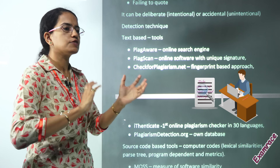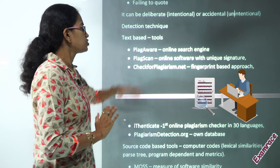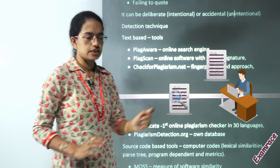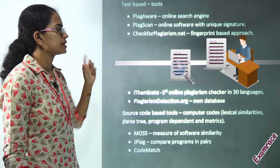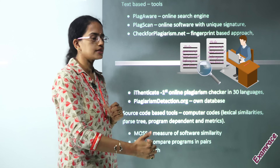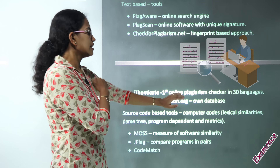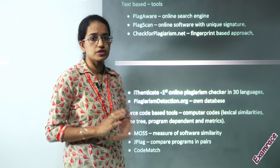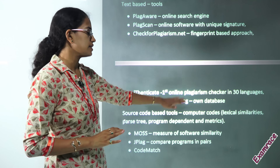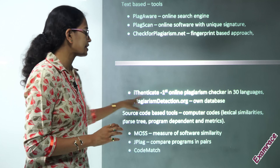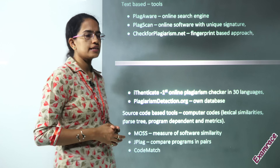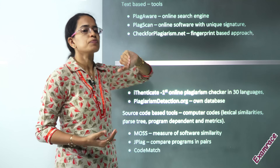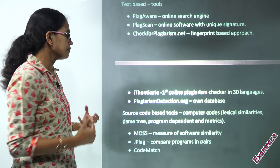Let's talk about the tools used to detect text-based plagiarism. PlagAware is a kind of online search engine. PlagScan is online software with unique signatures. CheckForPlagiarism.net is basically a fingerprint-based approach. Authenticate is basically the first online plagiarism checker, with existence in more than 30 languages. PlagiarismDetection.org has its own database. Authenticate would be important as we discuss Turnitin shortly.